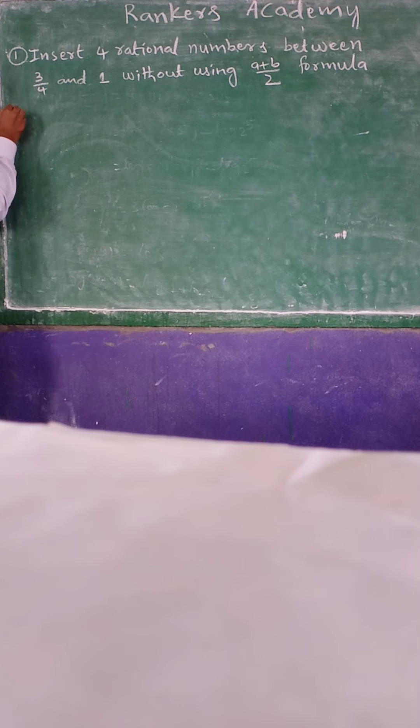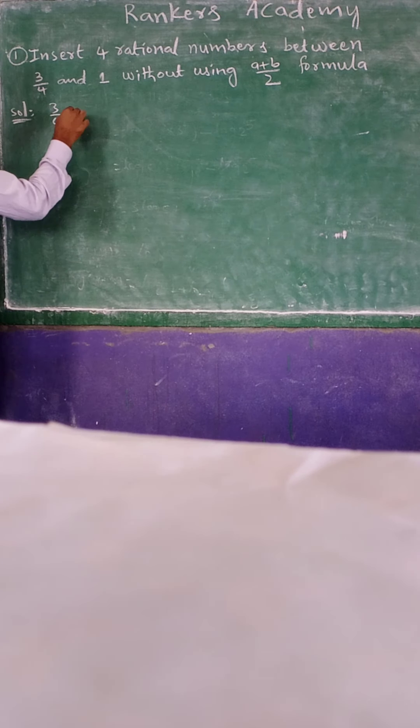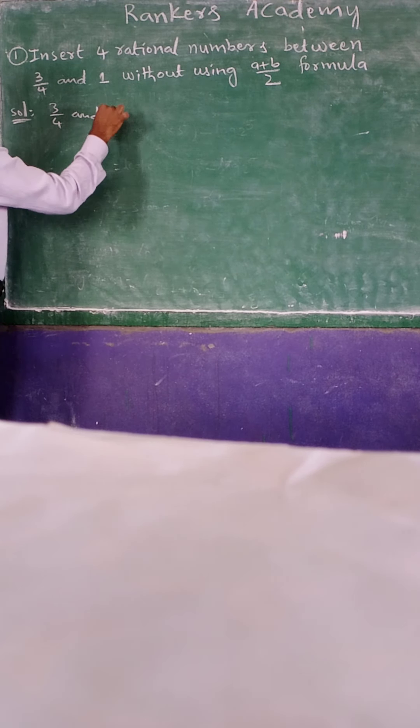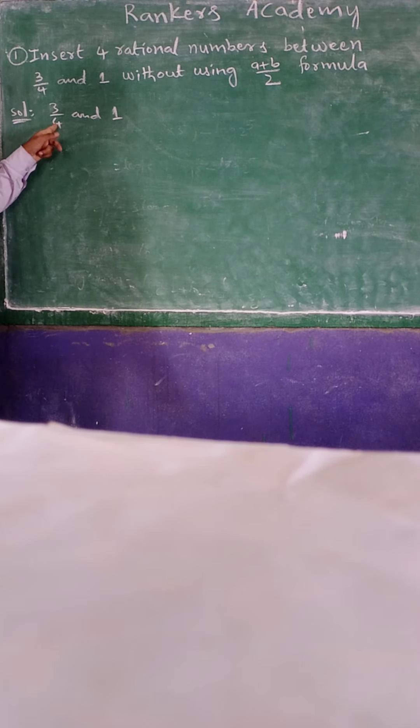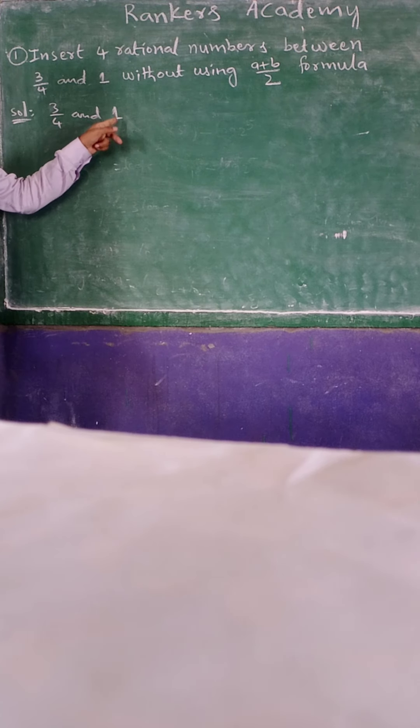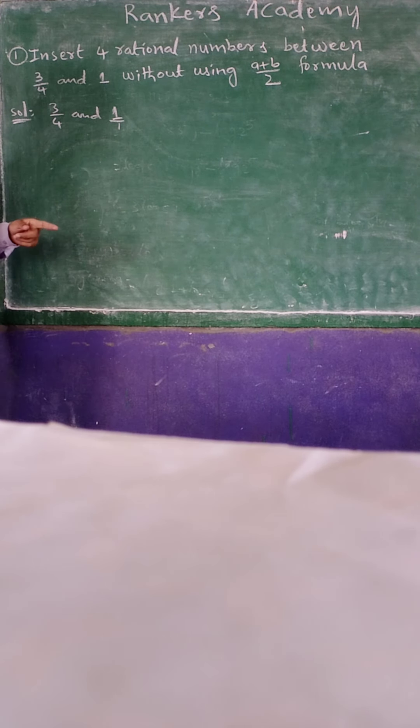First solution. See where they given that you write it here. Here first one, which one is there here, 3/4. 3/4 and 1 you take first. Next, denominator here how much is there, 4 there. Here how much is there, any number not there, that should be 1. So denominator is the first we have to make equal.